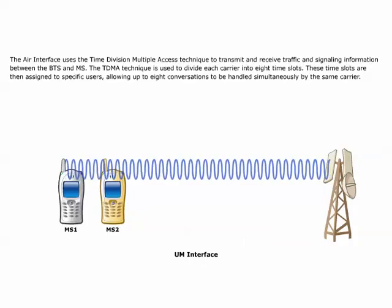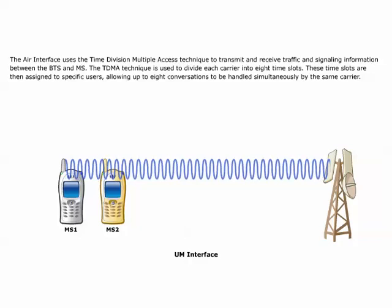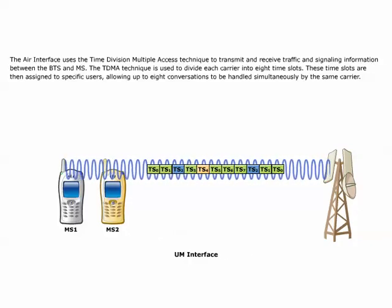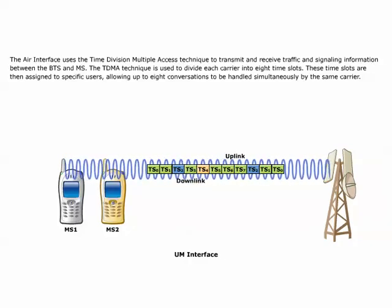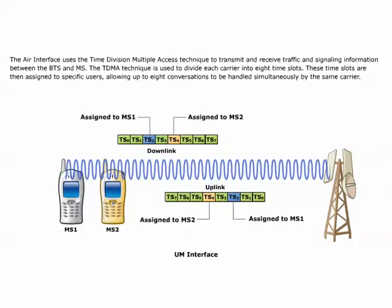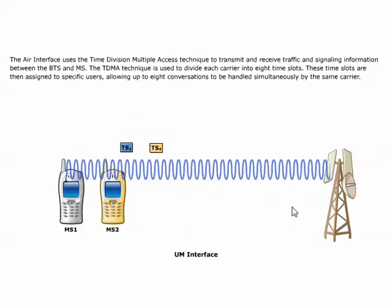The AIR interface uses the Time Division Multiple Access, TDMA technique, to transmit and receive traffic and signaling information between the BTS and MS. The TDMA technique is used to divide each carrier into eight time slots. These time slots are then assigned to specific users, allowing up to eight conversations to be handled simultaneously by the same carrier.